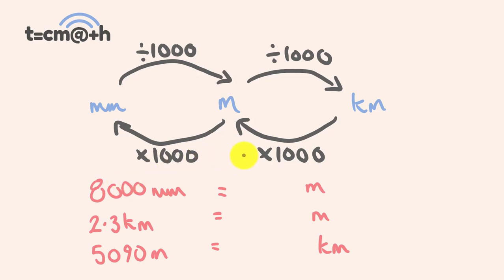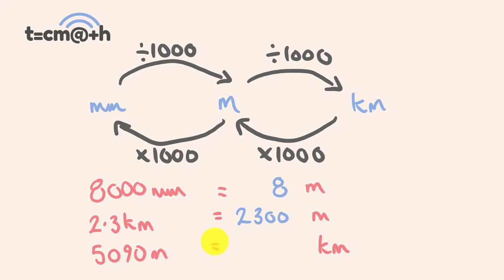First off, 8,000 millimeters to meters — we're going from millimeters to meters, so we divide by 1,000. 8,000 divided by 1,000 is equal to 8. Next, 2.3 kilometers to meters — we're multiplying by 1,000, so 2.3 times 1,000 becomes 2,300. And 5,090 meters to kilometers — dividing by 1,000 gives us 5.09. All we've really done is move the decimal place three times.